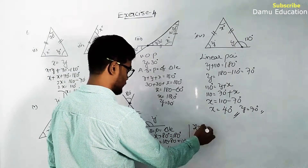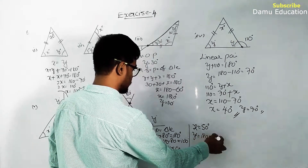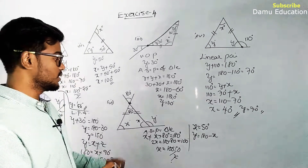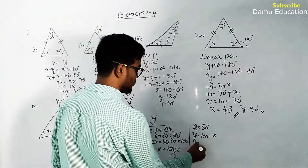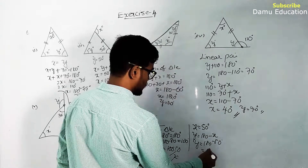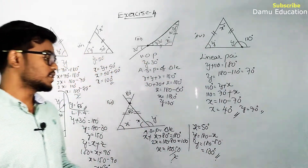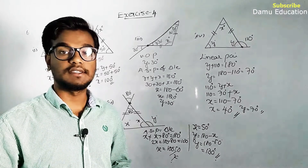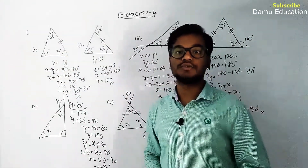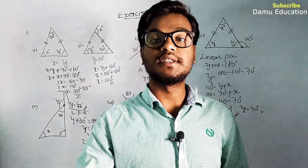Since y and x form a linear pair: y = 180 - x = 180 - 50 = 130°. Therefore x = 50° and y = 130°. Thanks for watching this video. If you want more videos, you can watch here on YouTube — please give a thumbs up and subscribe.